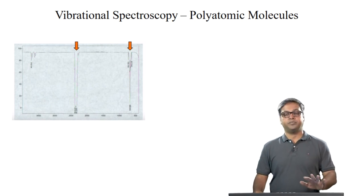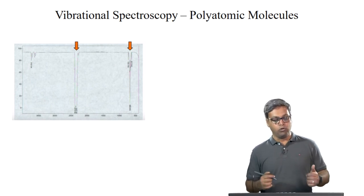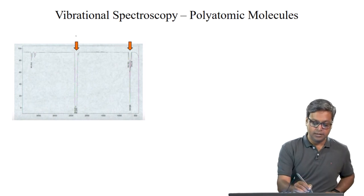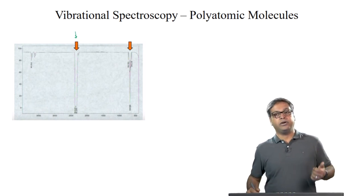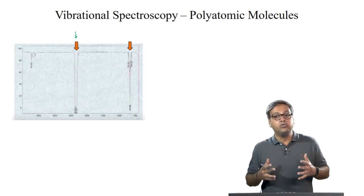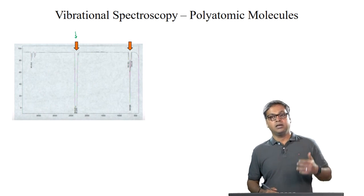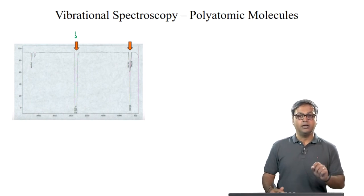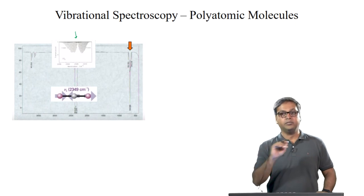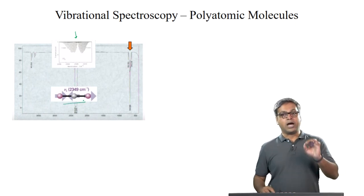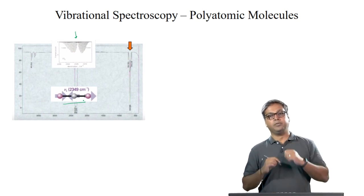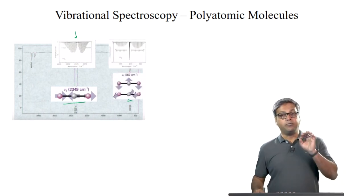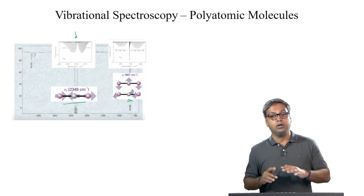This is the ro-vibrational spectrum of carbon dioxide shown in the previous lectures. We get a PQR branch centered at 2350 cm⁻¹, but because this is a low-resolution spectrum we cannot see the rotational fine structure. At high resolution we can see the fine structure. For the asymmetric stretch, the dipole moment changes along the principal axis; for the bending mode, the dipole moment changes perpendicular to the principal axis.